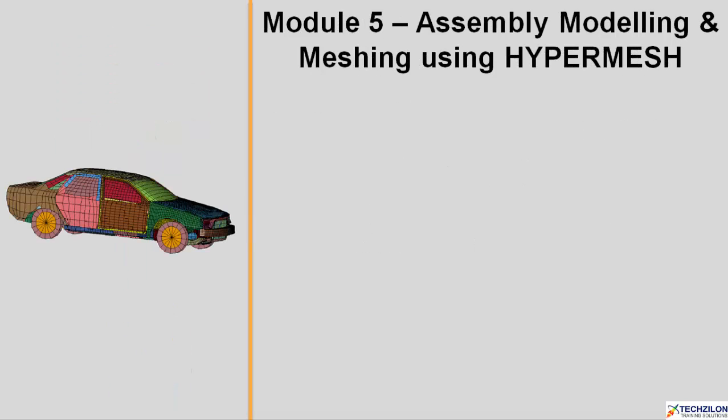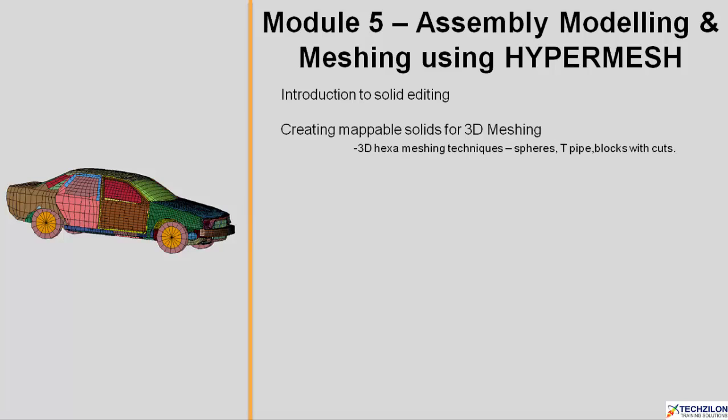In Module 5 you will learn about assembly modeling and meshing using HyperMesh. You will be introduced to solid editing, and then you will create mappable solids for 3D meshing. Under this you will learn 3D hexa meshing techniques for sphere, T-pipe, and block with cuts.